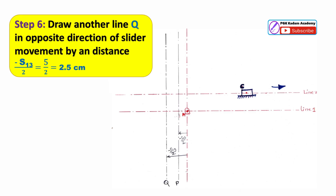Step 6: The displacement between the first and third position of the slider is S₁₃ equal to 5 cm. Suppose the slider moves outward from the crank end. For a slider moving outward, draw another line Q in the opposite direction by a distance of minus S₁₃ divided by 2 equal to 5/2 equal to 2.5 cm. Shift this vertical line by 2.5 cm in the reverse direction to the displacement of the slider.